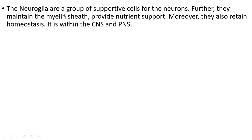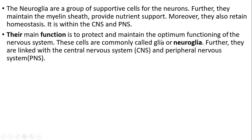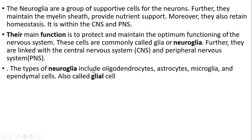Neuroglia are the group of supportive cells for neurons. They maintain the myelin sheath and provide nutrient support. They also retain homeostasis. They exist within the CNS and PNS. Their main function is to protect and maintain optimum functioning of the nervous system. These cells are commonly called glia or neuroglia. They link the central nervous system and peripheral nervous system. The types of neuroglia include oligodendrocytes, astrocytes, microglia and ependymal cells, also known as glial cells.